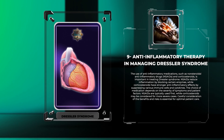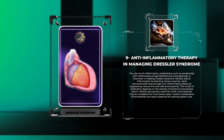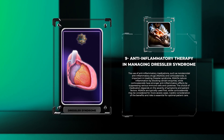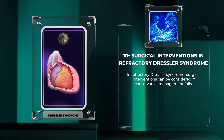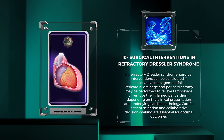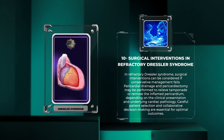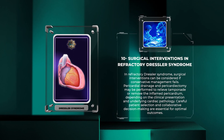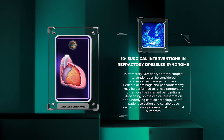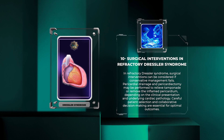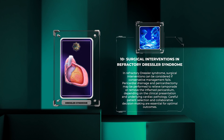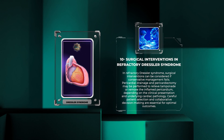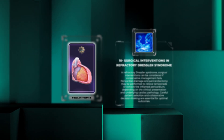In refractory Dressler syndrome, surgical interventions can be considered if conservative management fails. Pericardial drainage and pericardiectomy may be performed to relieve tamponade or remove the inflamed pericardium, depending on the clinical presentation and underlying cardiac pathology. Careful patient selection and collaborative decision-making are essential for optimal outcomes.